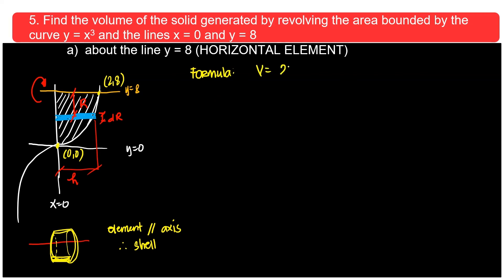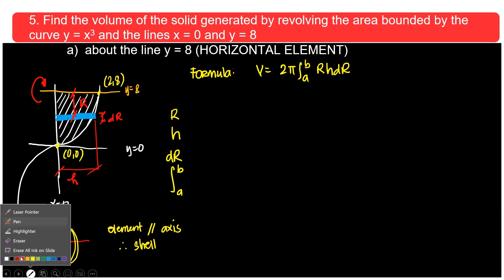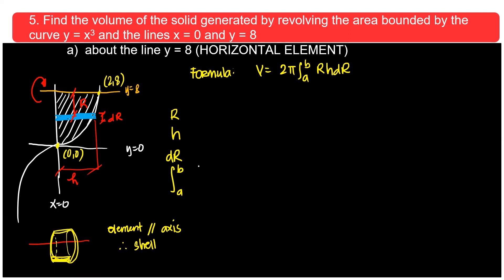So what's the formula for cylindrical shell? Volume is 2π integral from a to b of r, h, and dr. So you need these parts. So r, h, dr, and the integral from a to b. Let's go to the dr first. The dr, we know that's dy. So I'll be looking at the y values. 0 up until 8. No problem with this.